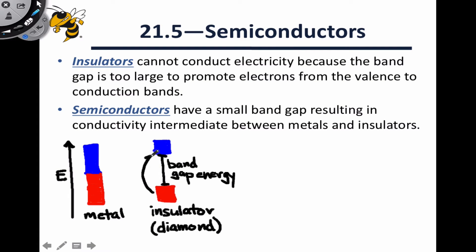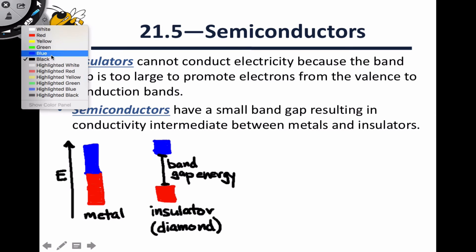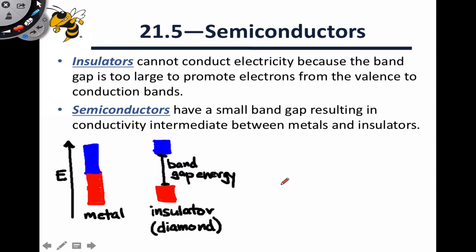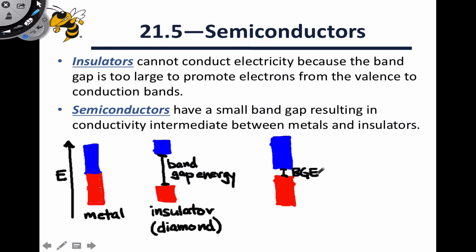If the band gap energy is too large, preventing excitation at normal temperatures, the material will act as an insulator. Between metals and insulators we have a fascinating group of compounds characterized by a small band gap — large enough to prevent conduction at room temperature, but can be narrowed through the introduction of an electric field. The band gap energy is intermediate between that of an insulator and a metal, so it's what we call a semiconductor.